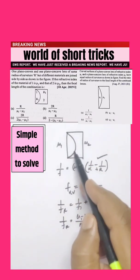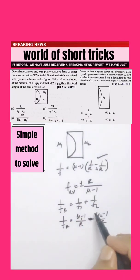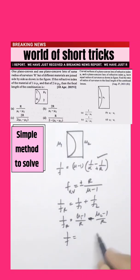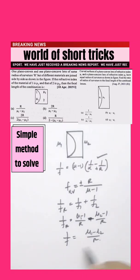Here minus sign will come because for a plano concave, focal length is minus. After simplifying, you will get 1 by f equals mu1 minus mu2 by r.